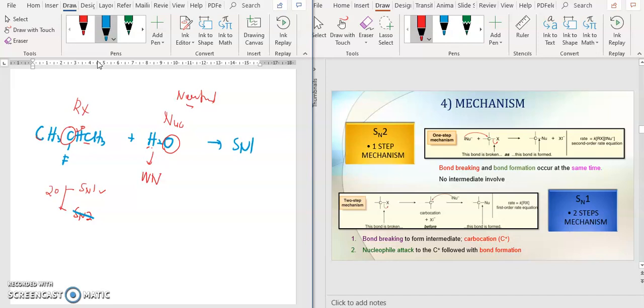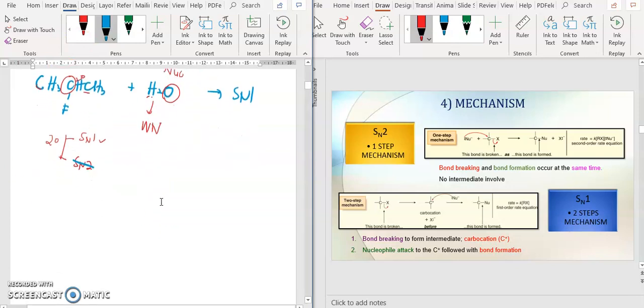When you're going to talk about the SN1 reaction, you will proceed the mechanism for SN1 if the question asks for the mechanism. The mechanism of SN1 is a bit different with the SN2 because remember previously I said that SN1 will have the carbocation, so meaning that the first step in mechanism for SN1 reaction you will have your formation of carbocation.